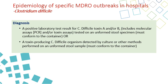Diagnosis is either by detecting the toxin — positive lab tests for C. difficile toxins A, B, or both — which can be done by toxin assay or PCR. Additionally, we can detect the toxin-producing C. difficile organism itself by culture or other methods, performed on an unformed stool sample, meaning the patient has diarrhea and the stool takes the shape of the container. We do not test a formed stool sample.